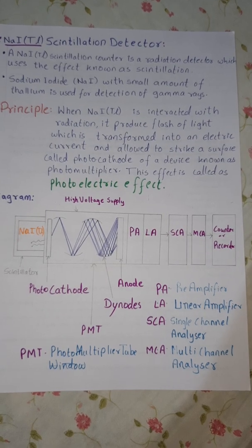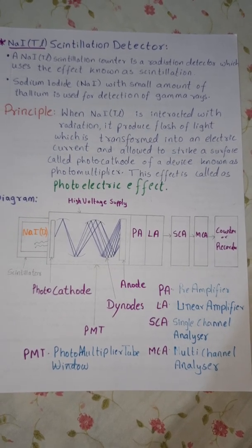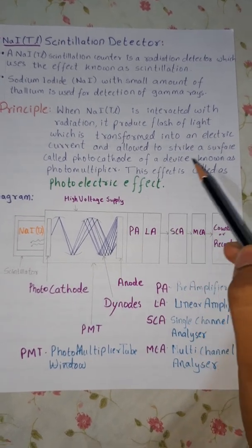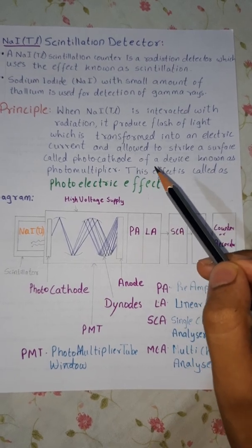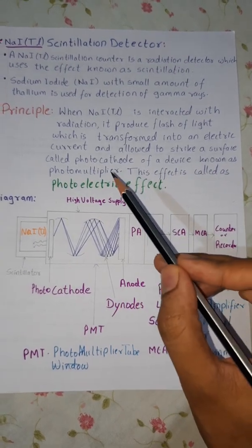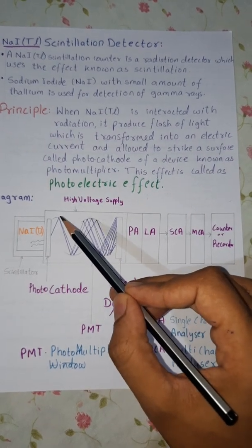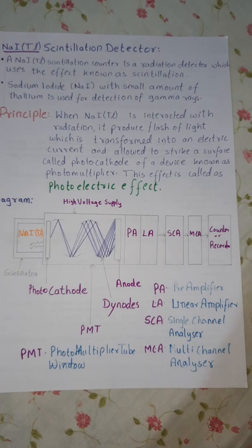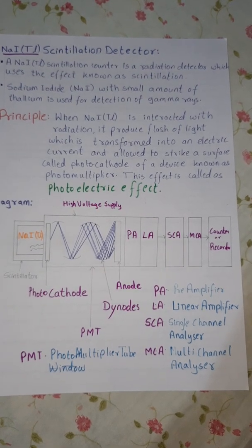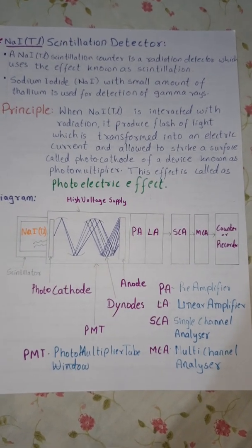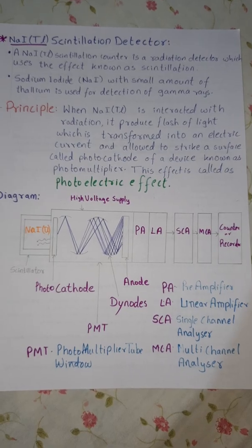When NAITL is interacted with radiation, it produces flash of light which is transformed into an electric current and allowed to strike a surface called photocathode. This is a photocathode and this is a dinode and this is an anode. This is how it works and the principle follows.